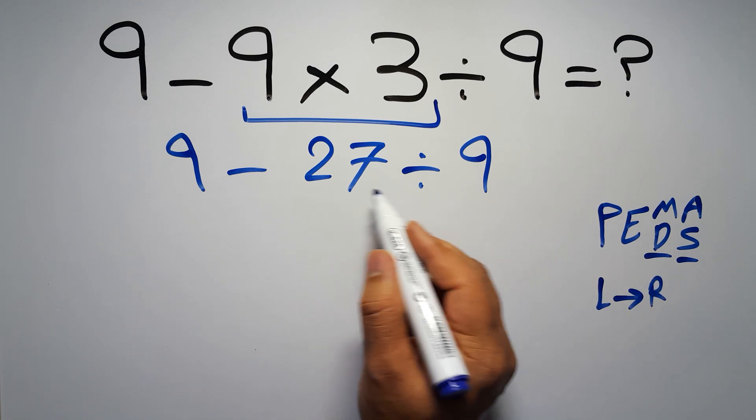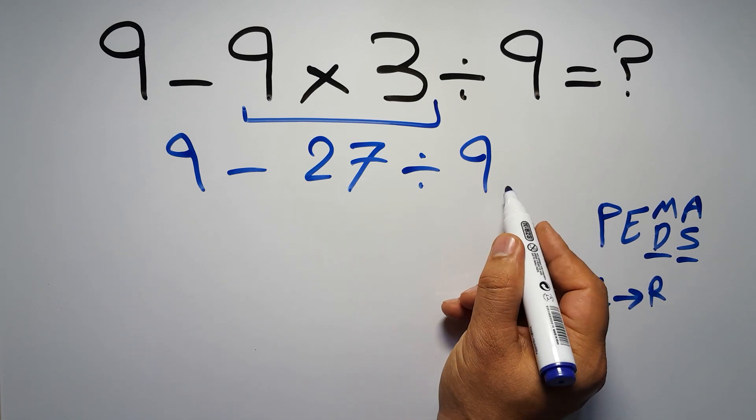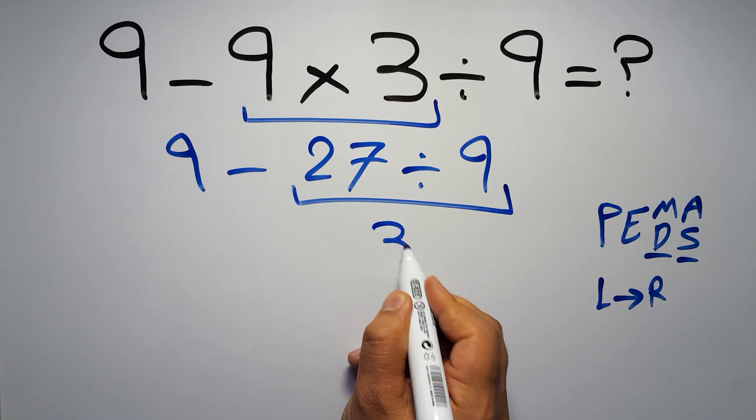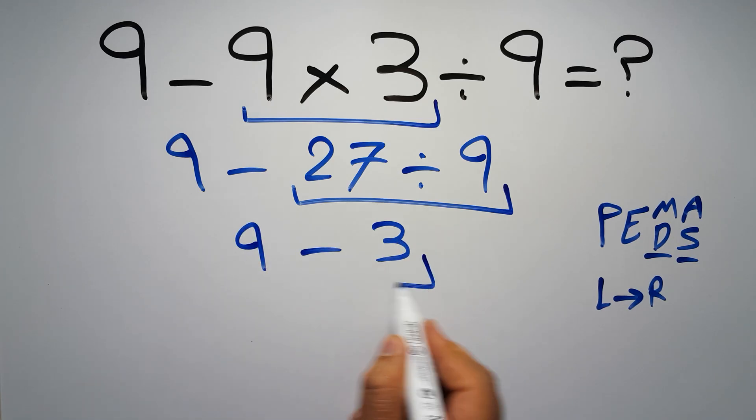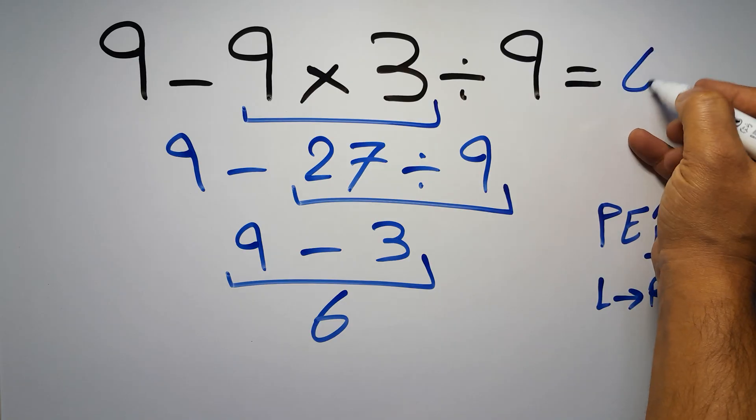So here first we have to do this division. 27 divided by 9 gives us 3, so 9 minus 3 which equals 6. And this is our final answer to this problem. The correct answer is 6.